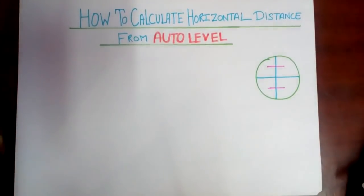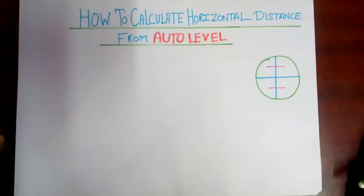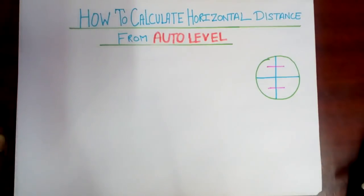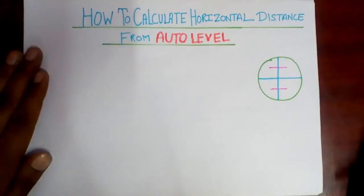Hello guys, once again this is Ibor Shukla. Today we'll discuss a very important topic used in civil engineering, related to surveying, done by surveyors — how to calculate horizontal distance from an auto level. Many surveyors don't know how to do it, but in this particular session I will tell you how to calculate distance from an auto level. So let's start the session.